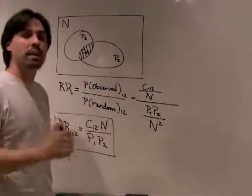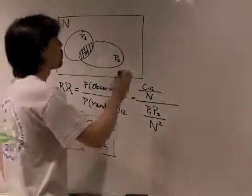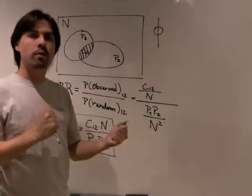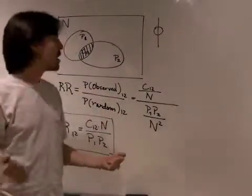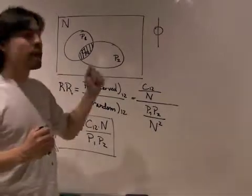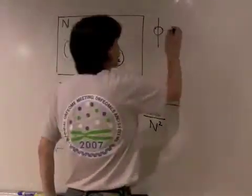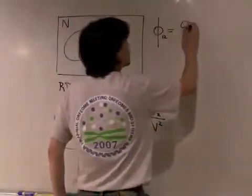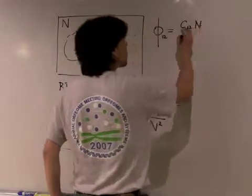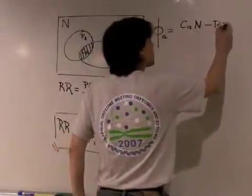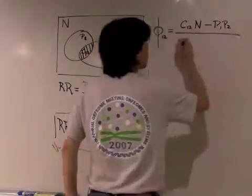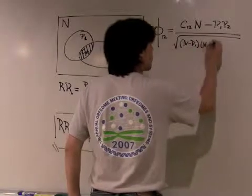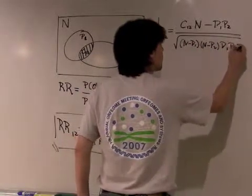Another way in which we can quantify the comorbidity between two diseases is to look at the correlation between them. Because diseases are dichotomous variables — you either have a disease or not — the correlation formula simplifies into the following expression. The correlation between diseases 1 and 2 is equal to C12 times N minus the product between the prevalences, normalized by the square root of (N minus P1) times (N minus P2) times P1 times P2.